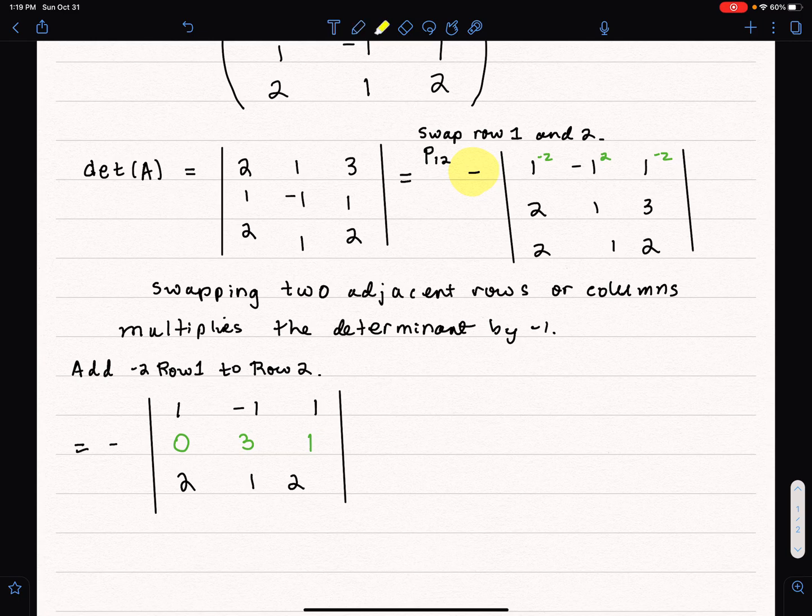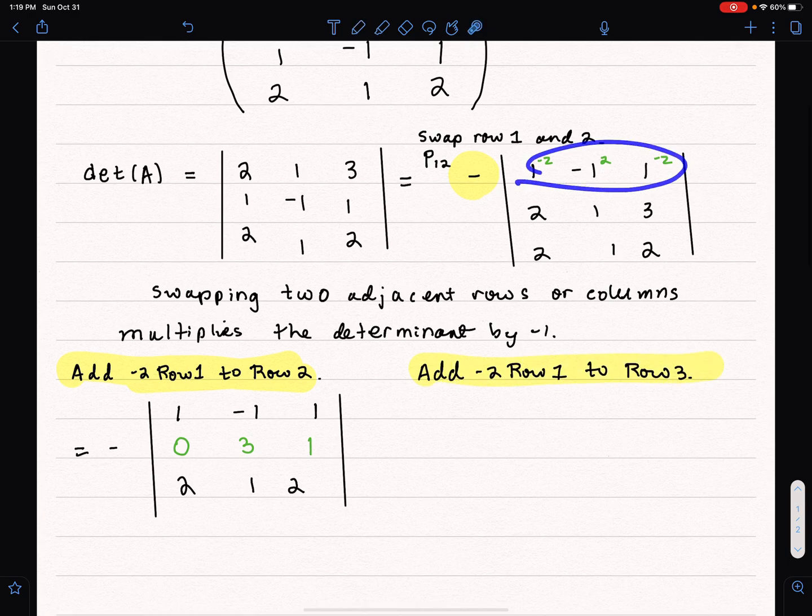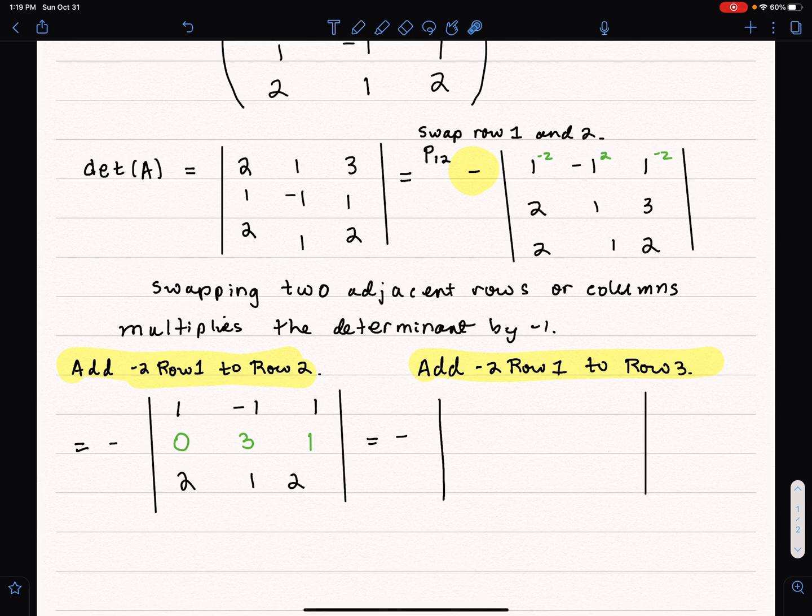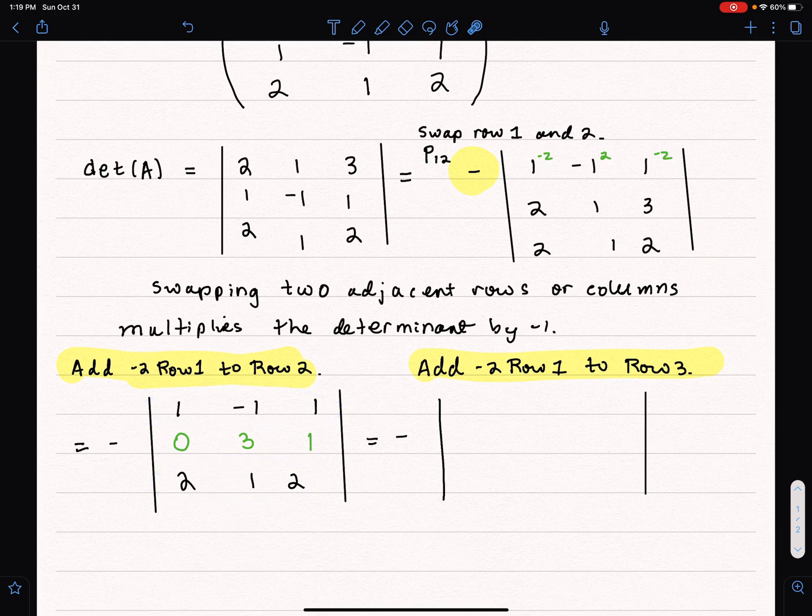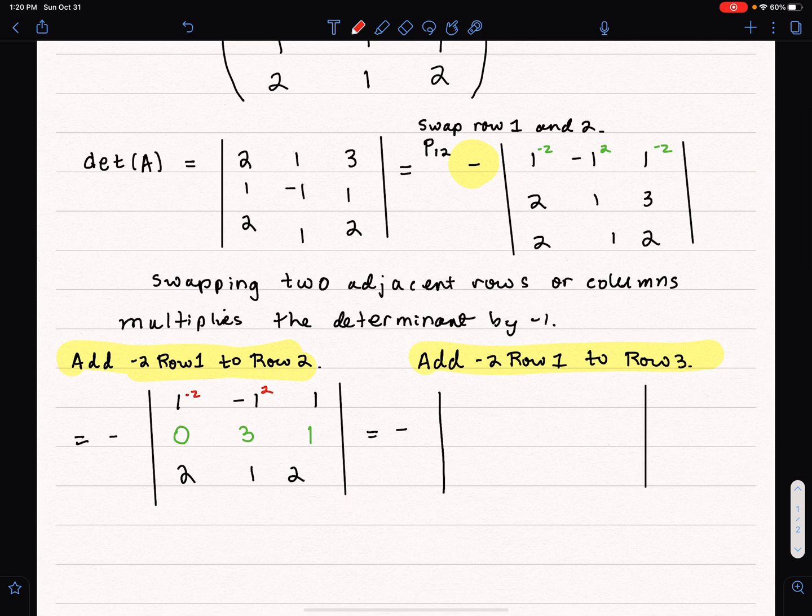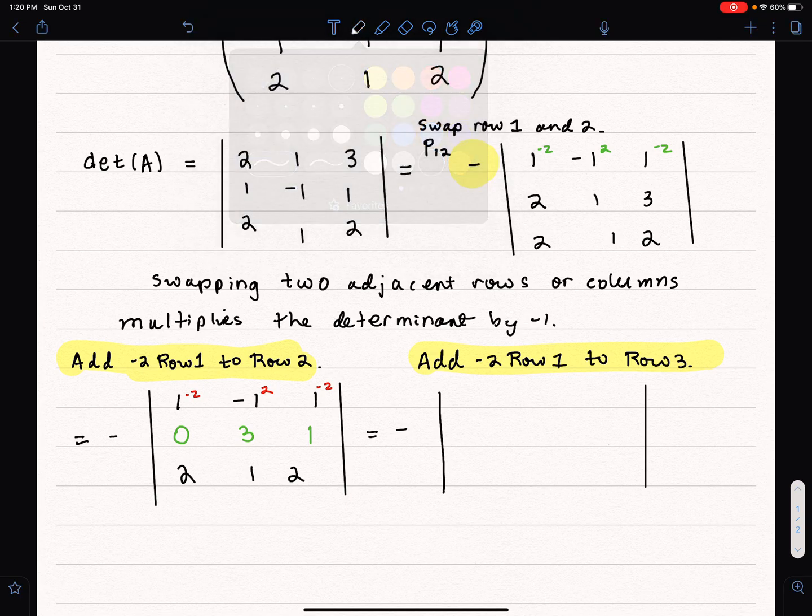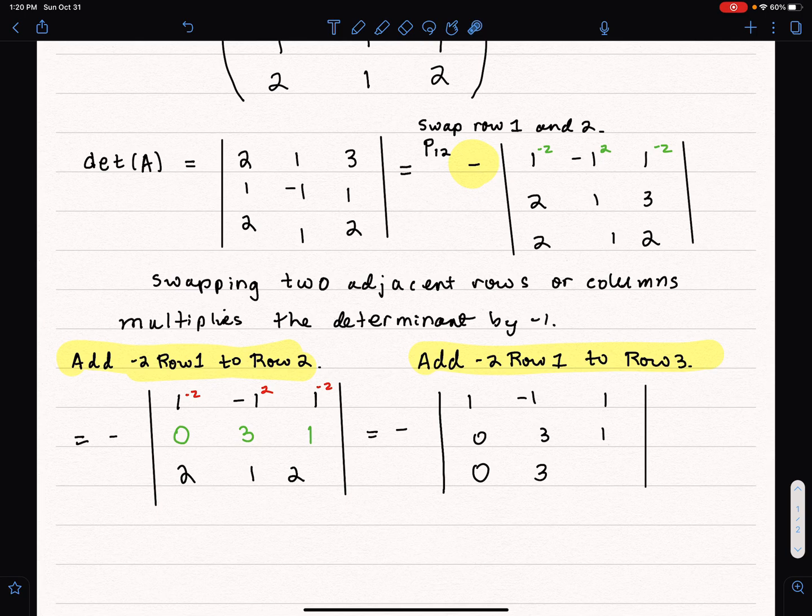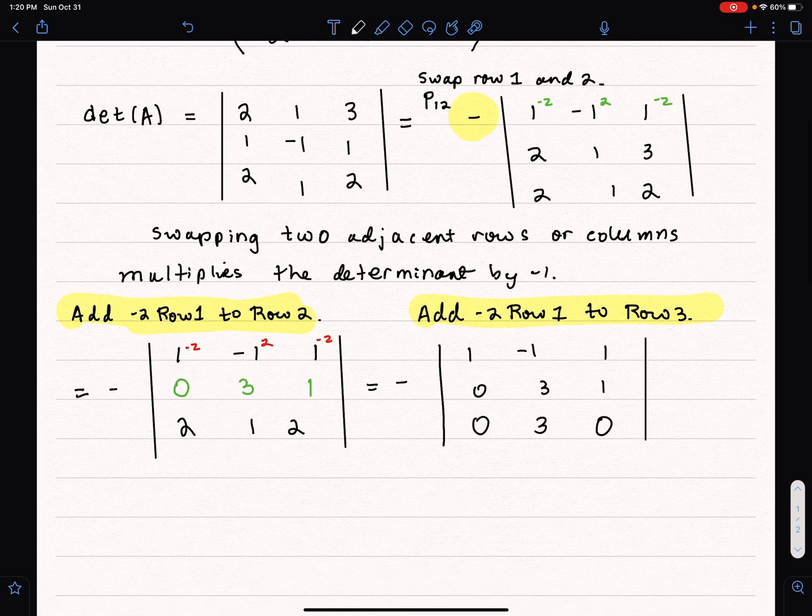Then I'm going to add negative 2 times row 1 to row 3. So multiplying by negative 2 and adding to row 3. Negative 2 plus 2 makes 0, 2 plus 1 makes 3, negative 2 plus 2 makes 0. Getting close to upper triangle form.